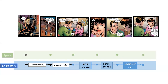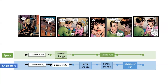The same thing goes for space. We can recognize some discontinuity across the first panels, going from the streets to the building, and some partial change when we go from the outside of the building to the inside. For the last four panels, we remain in the same room, which constitutes a space run — a sequence of the same information repeated across panels.